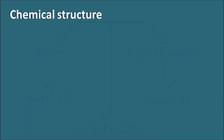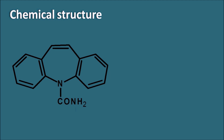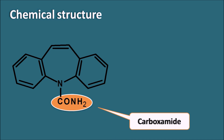Regarding the chemical structure of carbamazepine: it has a fused ring system, and one of its functional groups is the carboxamide. Carbamazepine has a fused ring system with two benzene rings, so it can be called dibenzo. This dibenzo ring is fused with a seven-membered ring system containing one nitrogen, which is called azepine.